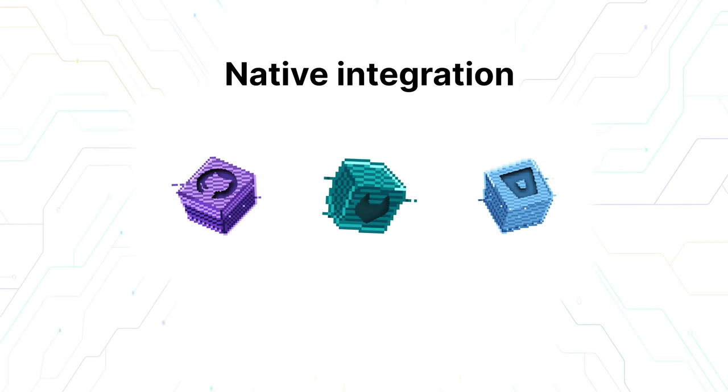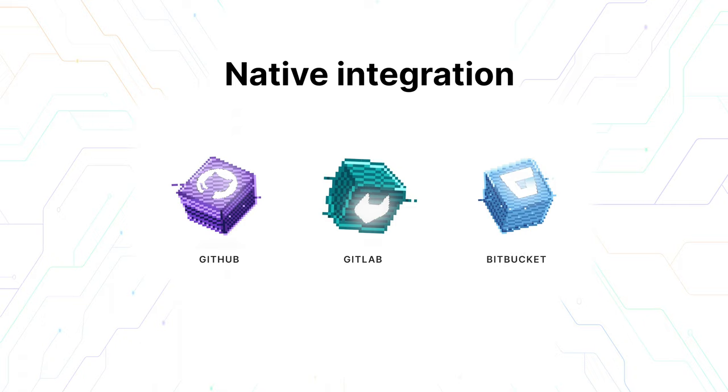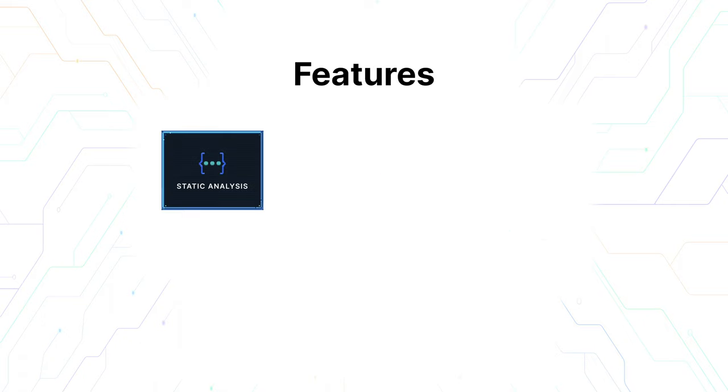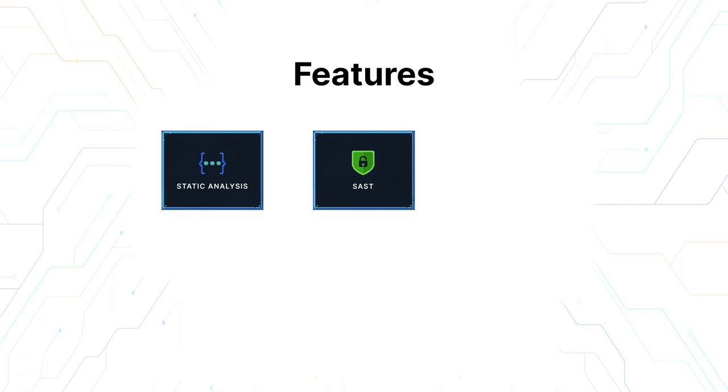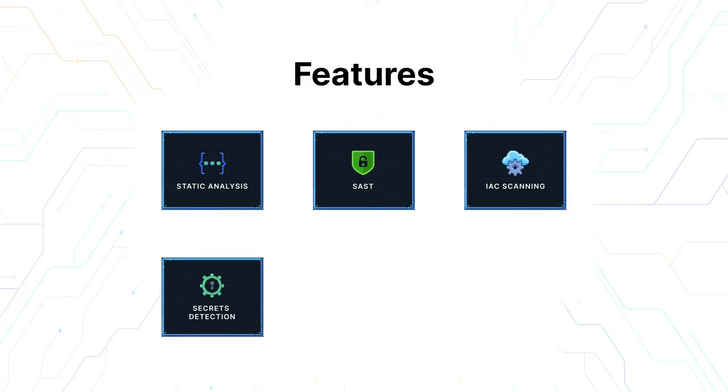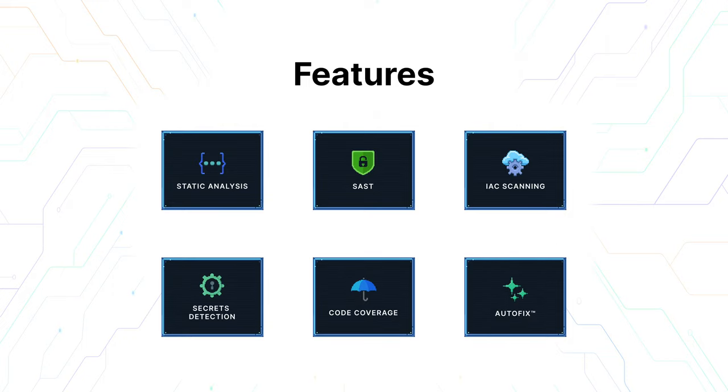DeepSource's code health platform equips engineering teams with everything they need to build maintainable and secure software without compromising software development velocity. Our native integration with version control systems like GitHub, GitLab and Bitbucket, paired with powerful features like static analysis, SAST, infrastructure as code scanning, secrets detection, code coverage tracking and autofix, means developers can focus on building great software while DeepSource takes care of automating everything code health.